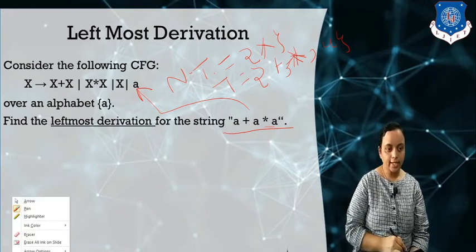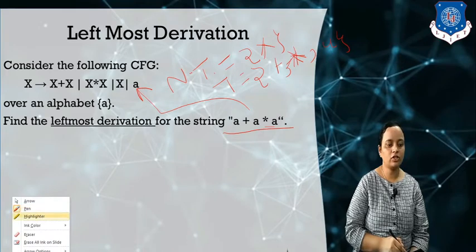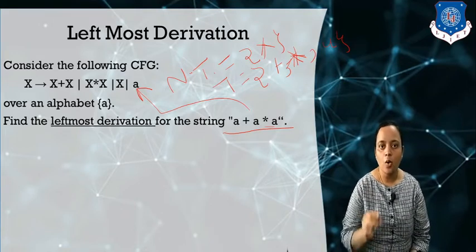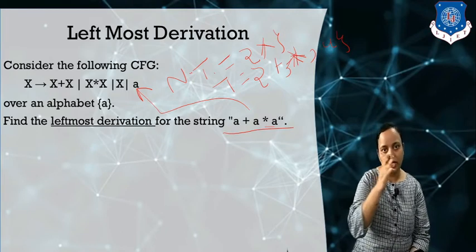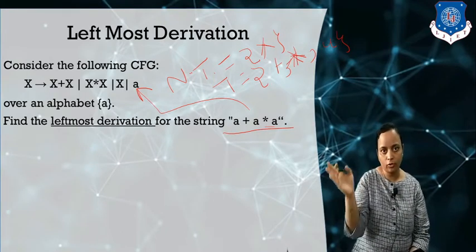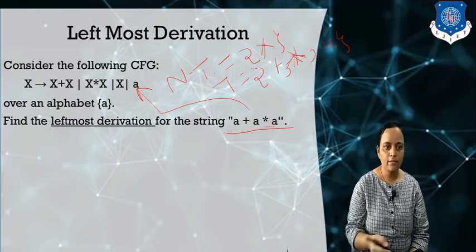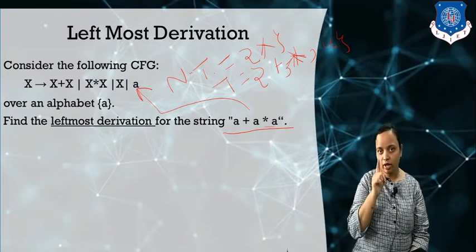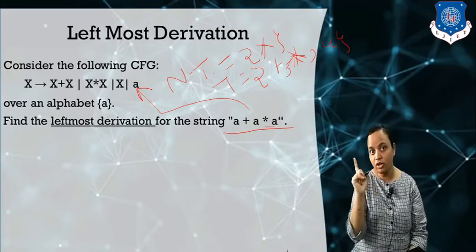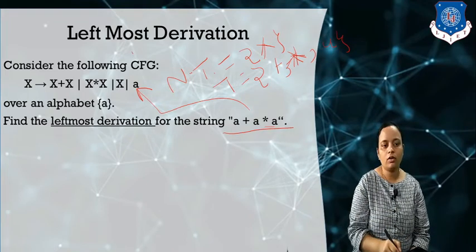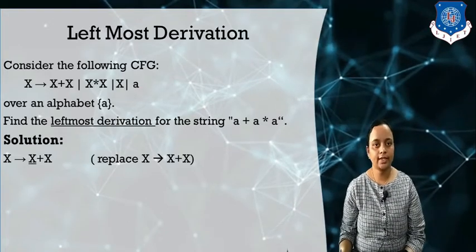Let us understand this concept by using the derivation form so you can get a clear idea. We are performing in step form — this is called a left derivation step. In each and every step we need to expand only the leftmost non-terminal first. So in the first step, X is replaced by X plus X. This is the leftmost step.